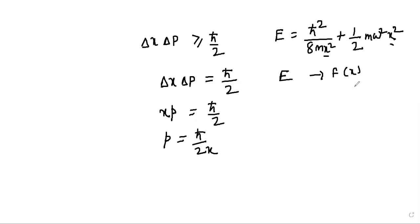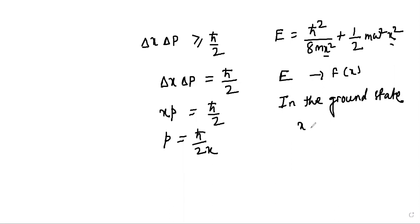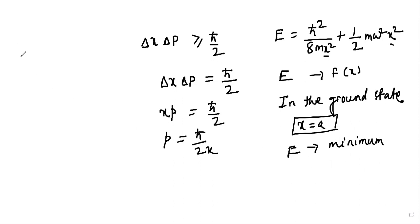To find the ground state energy, we know the energy will be minimum. Suppose at x = a the energy is minimum. Since E is minimum at x = a, the mathematical condition is that dE/dx evaluated at x = a must be zero.